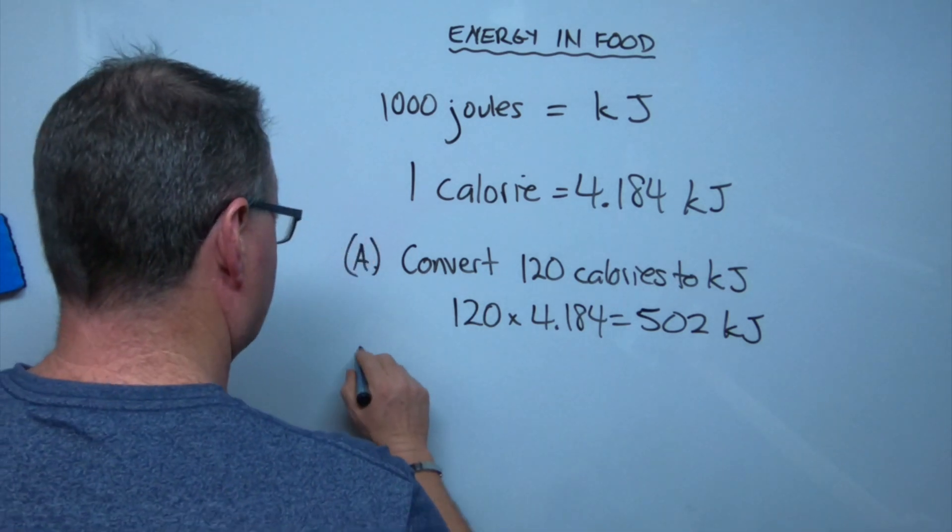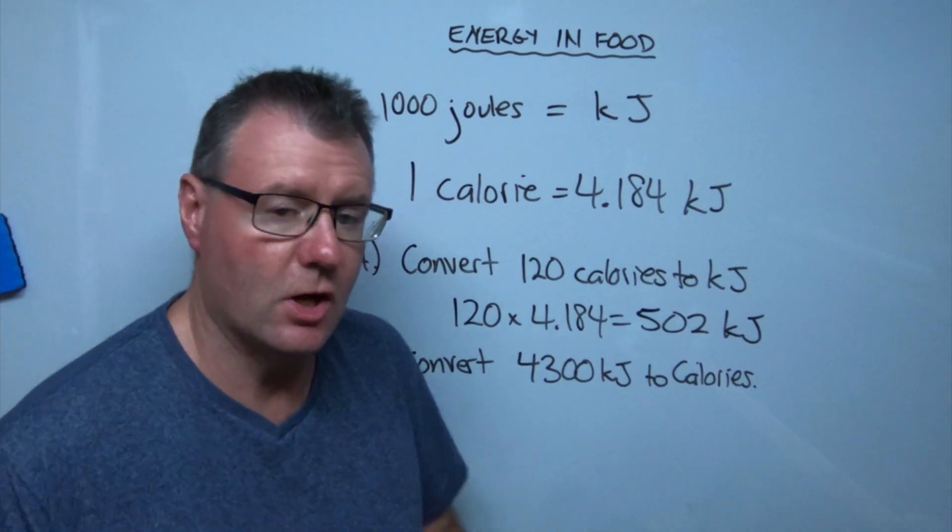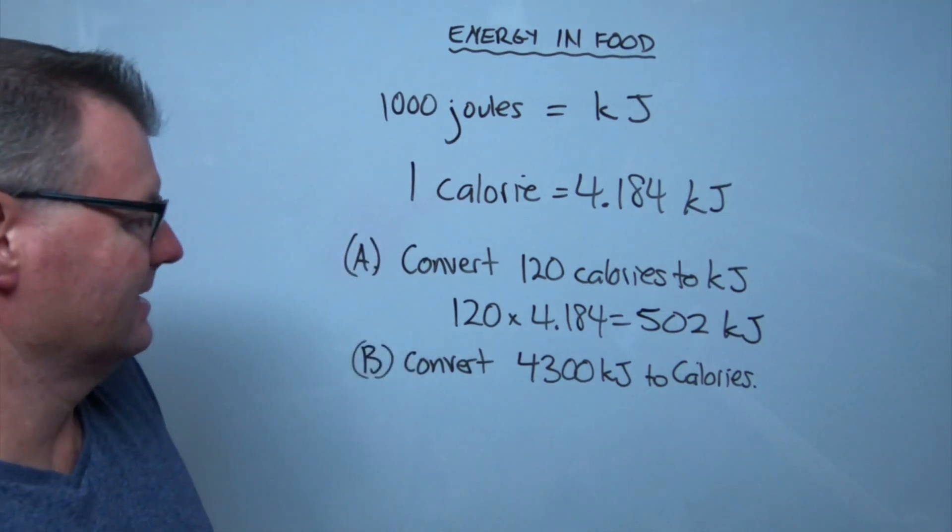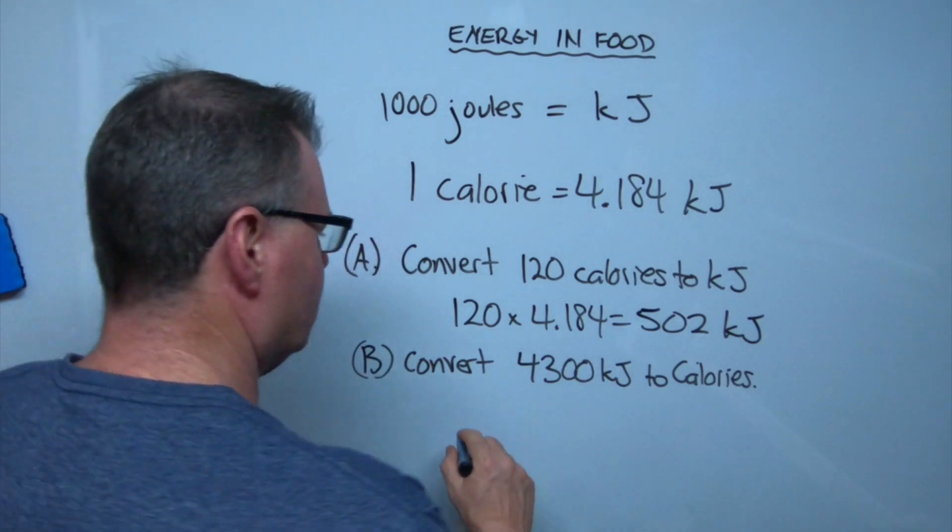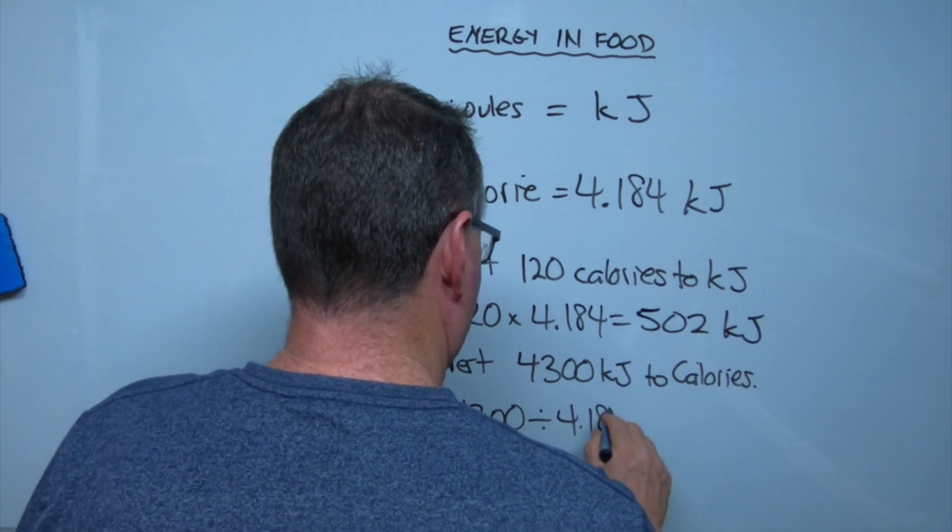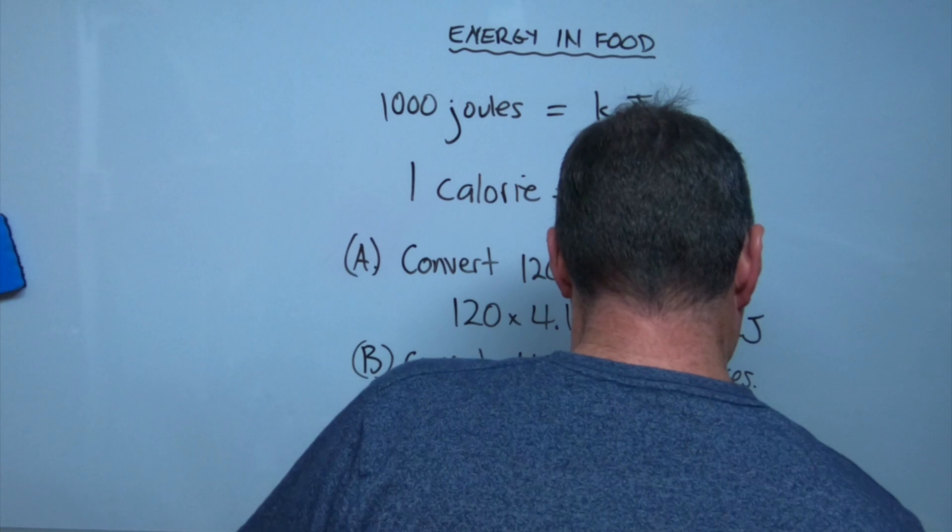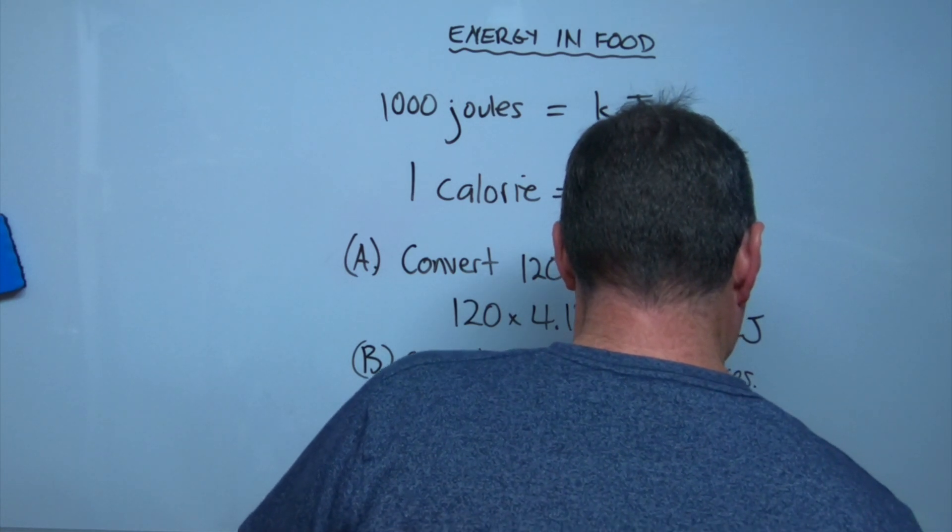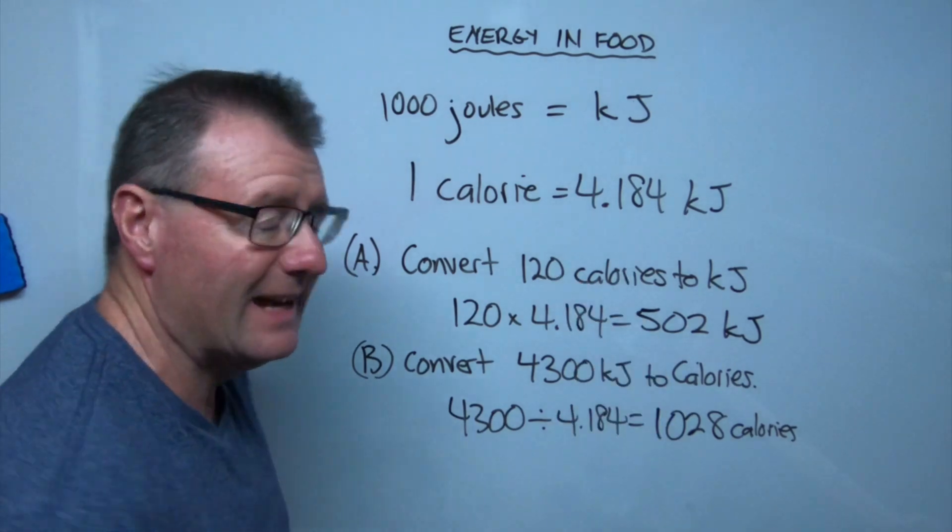What about going back in reverse? So we're going to ask, or we've been asked to convert 4,300 kilojoules back to calories. Well, we're going to divide. And in this case, it's 1,200 calories.